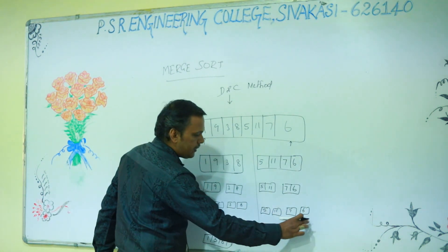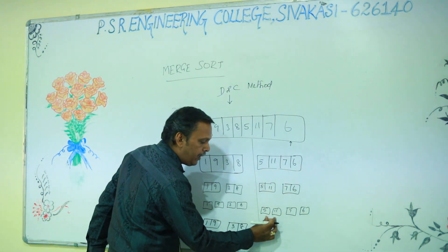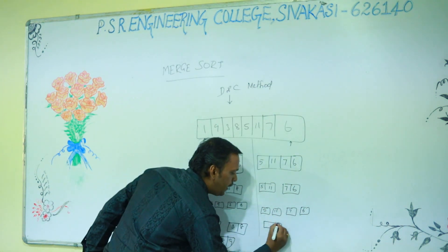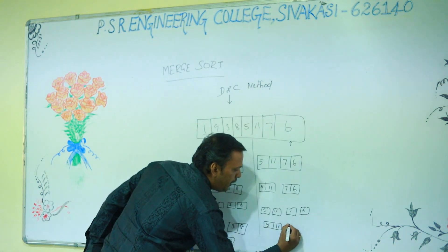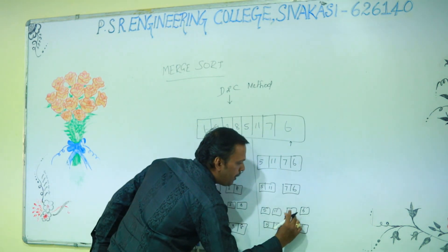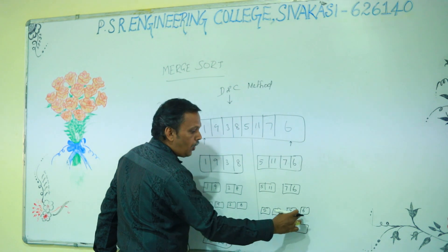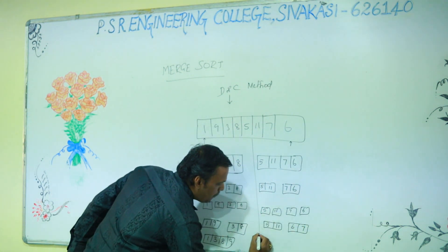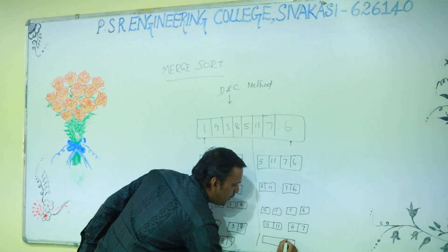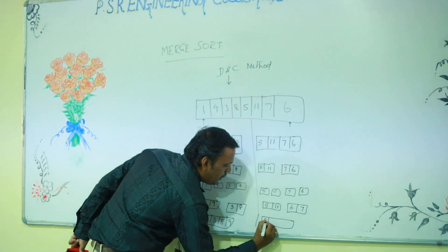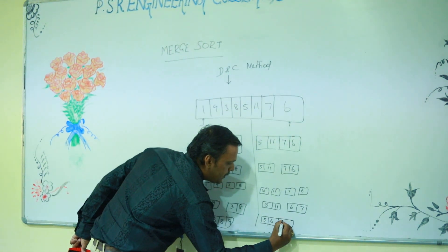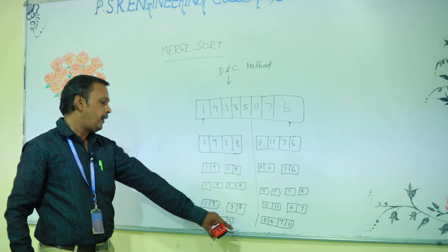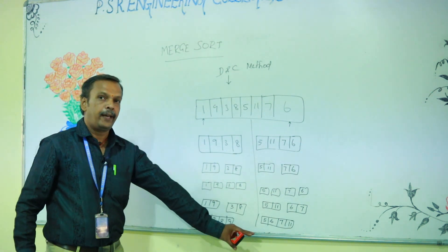Separately sorted. Here 5 and 11, 7 and 6. We compare 5 and 11 — 5 is smaller and 11 is larger, already sorted, so 5, 11. Here 7 and 6 — compare 7 and 6 — 6 is smaller, 7 is larger, so sorted as 6, 7. Finally we merge and sort, combining as 5, 6, 7, 11. These two sub-listed arrays are sorted separately.